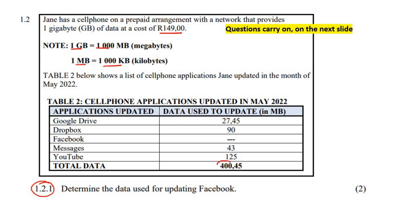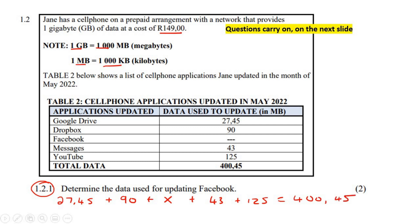They told us that the total data was 400.45. So we can use that number together with these four numbers to work out what Facebook should have been. We know that 27.45 plus 90, plus Facebook — which I'll just call X — plus 43, plus 125, if you add all of that together, it's supposed to give you 400.45. So I'm just going to add these four values together — typing those four numbers on my calculator — and that gives us 285.45.